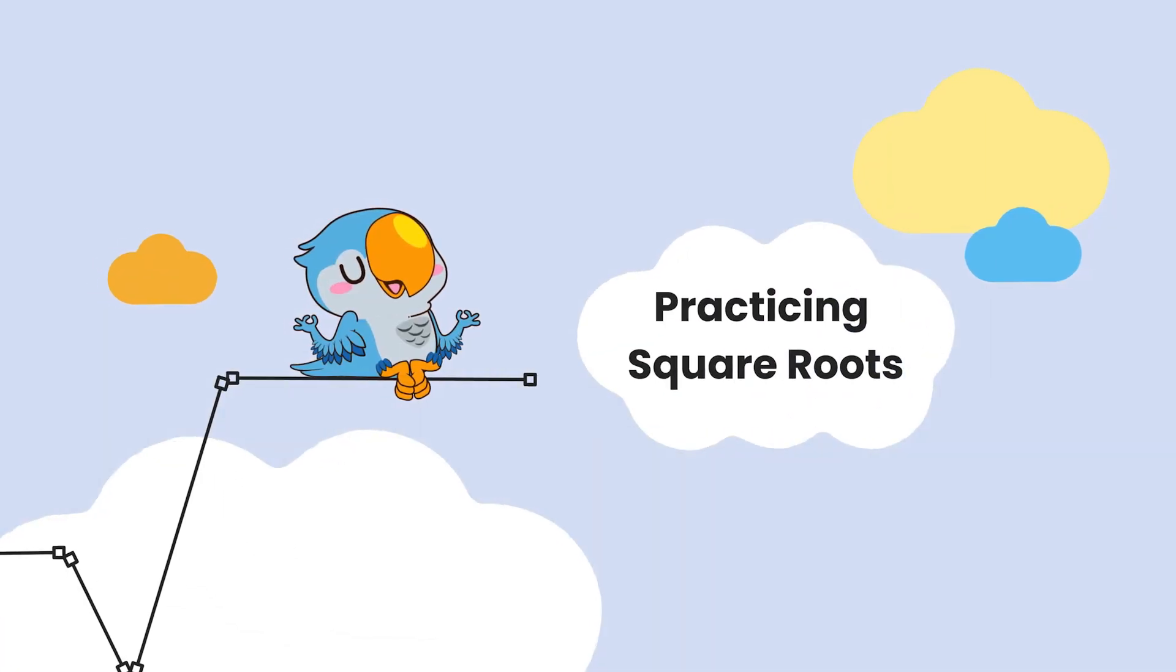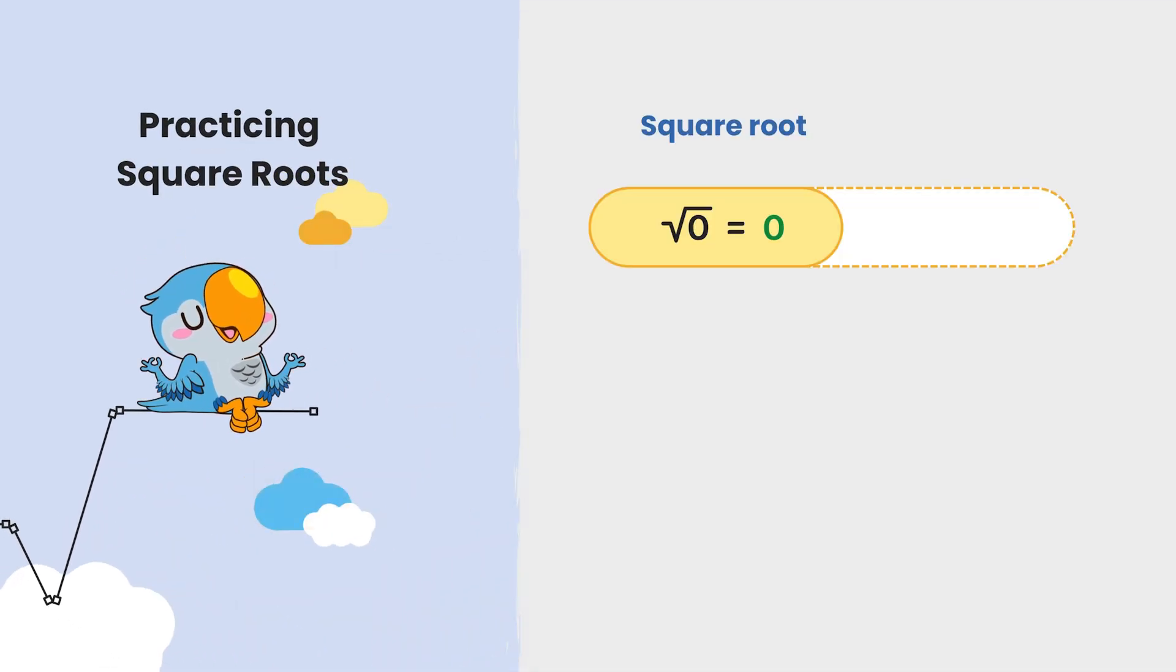Let's get more familiar with finding square roots. First, the square root of 0 is 0 because 0 squared is 0.